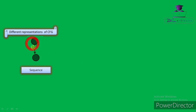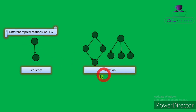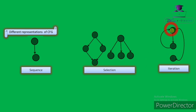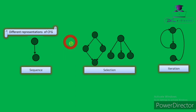For sequence statements, the control flow graph looks like a straight path. For selection, two diagrams are shown — one for if-else conditions, where a condition leads to two different situations, and another representing switch case, where a condition leads to multiple situations and only one is executed. For iteration or loop statements, there may be a repeated step to be executed before the program ends.